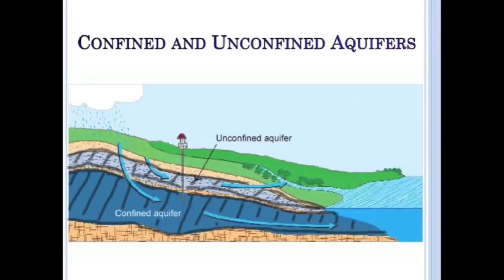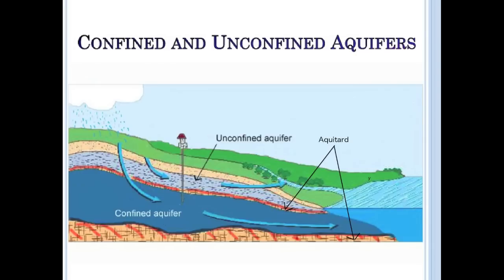An aquifer is a body of water beneath the Earth's surface from which water sources such as precipitation or stream input collect. This water slowly saturates a permeable layer of Earth. The opposite of an aquifer is an aquitard, where this section of Earth is impermeable.